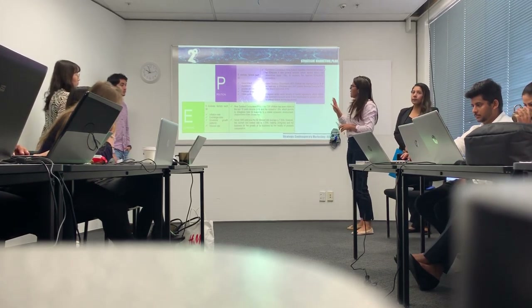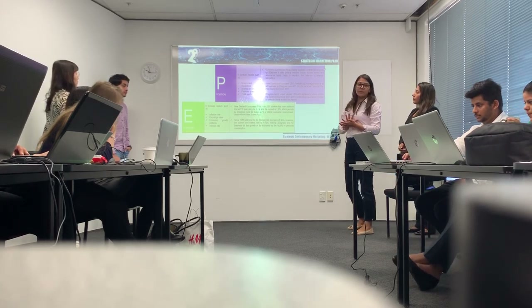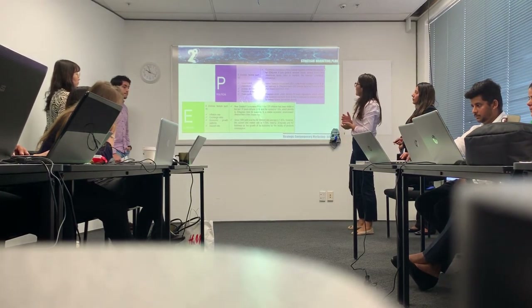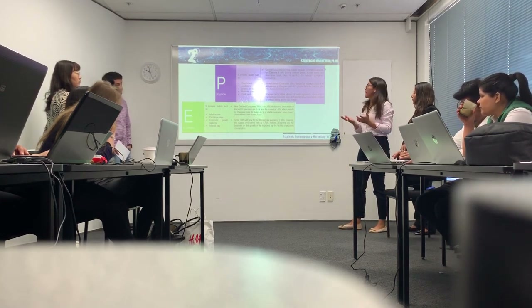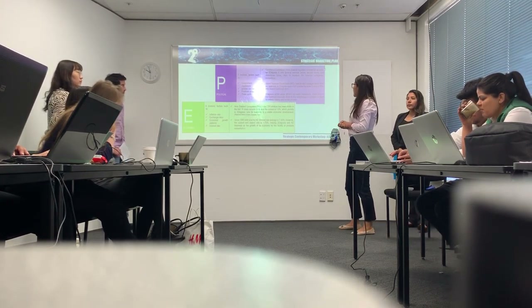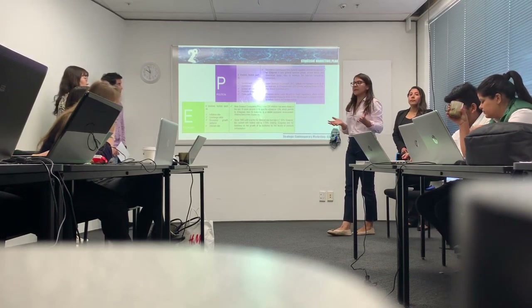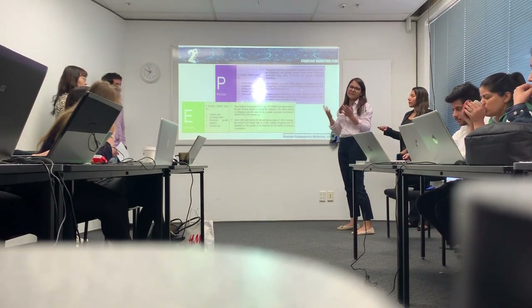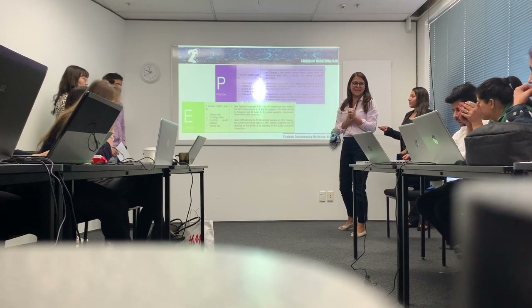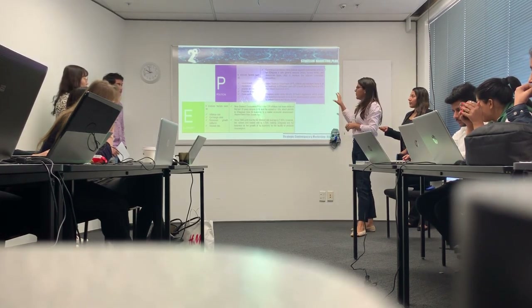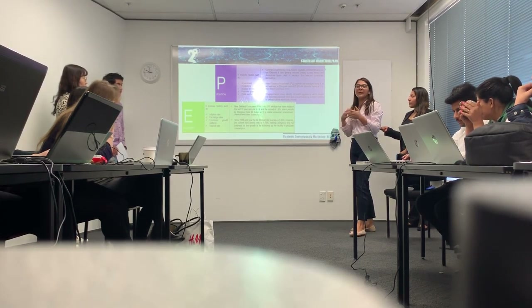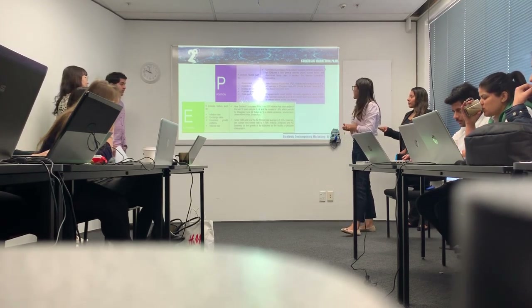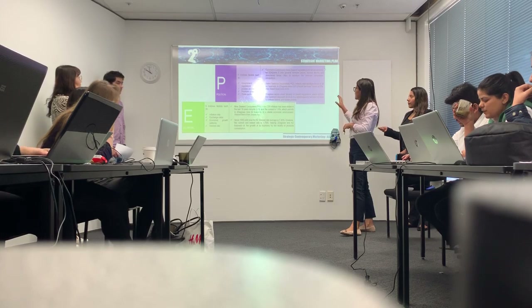The first one is political factors. In this group of factors we can find government regulations, policies, laws, pressure groups, or trade studies. For Two Degrees, we found three important factors in this group. The first one is all the regulations made by the Commerce Commission of New Zealand, which is the department that regulates prices for all the companies around the country.